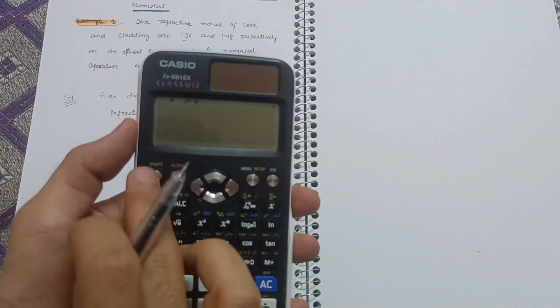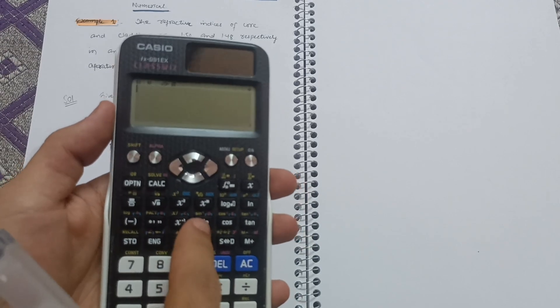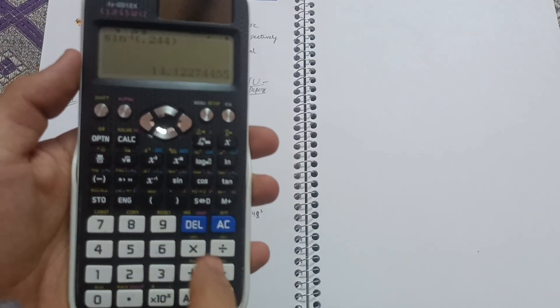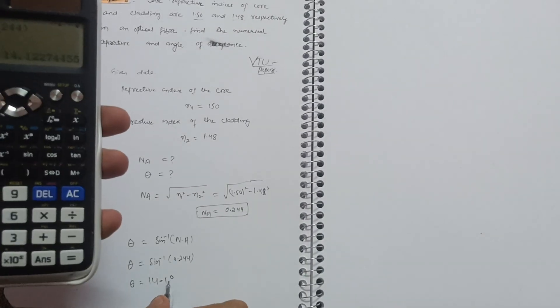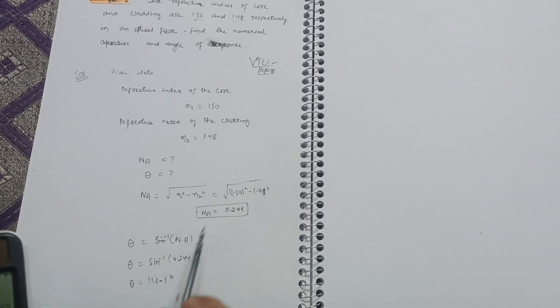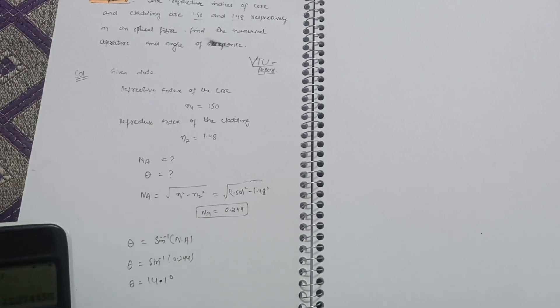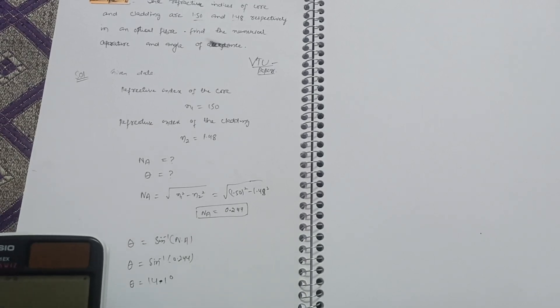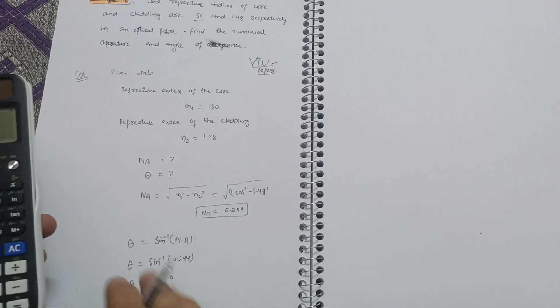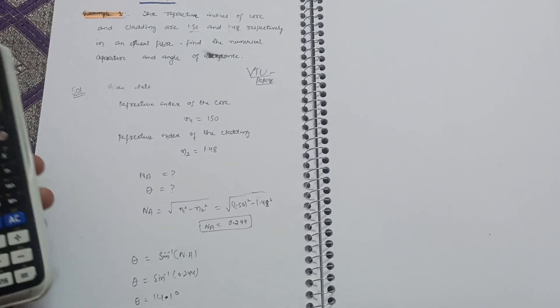On the calculator, press Shift and then sine inverse of 0.244, and you will get the answer: theta is equal to 14.1 degrees. So the numerical aperture is 0.244 and the angle of acceptance is 14.1 degrees — that is your answer for this problem. For other problems, just substitute the values and remember the formulas, and you can tackle these physics numericals very easily. All the best for your examination, thank you.